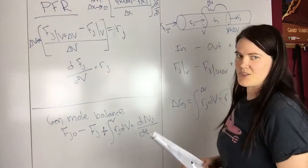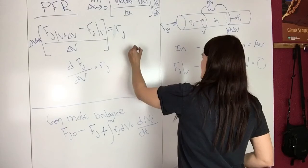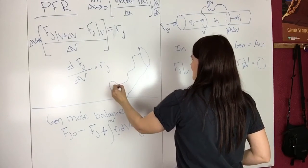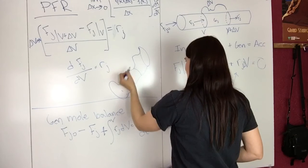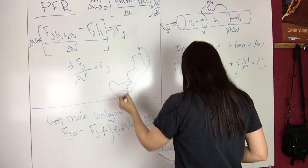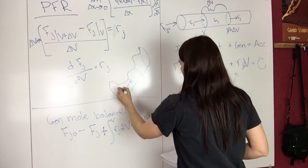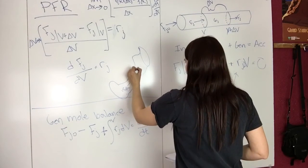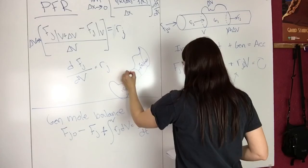Something interesting about this equation is, say you have an irregular shaped reactor that looks something like this—not that you would, but say you do. If you do the same thing on this, you have a molar flow rate in and a molar flow rate out.